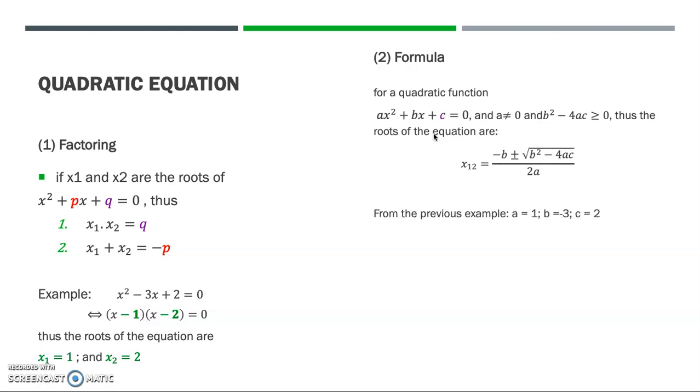Thus, taking the previous example here, we define that a = 1, b = -3, and c = 2. To solve x₁ and x₂, the roots of the equation, we just plug these numbers into the formula. This is the form. And then if we simplify, we get this form. And we have x₁ = 2 and x₂ = 1, just similar to what we get when we do factoring.